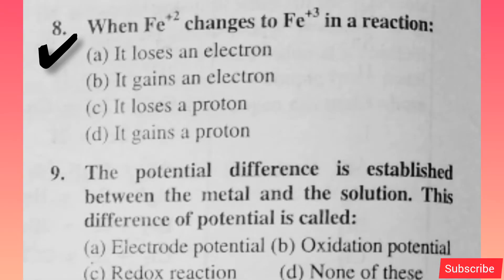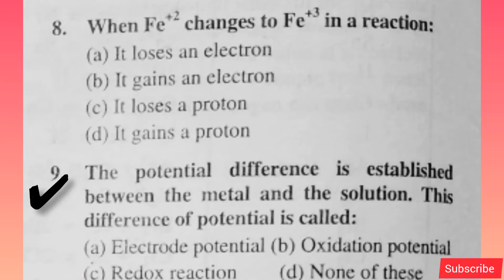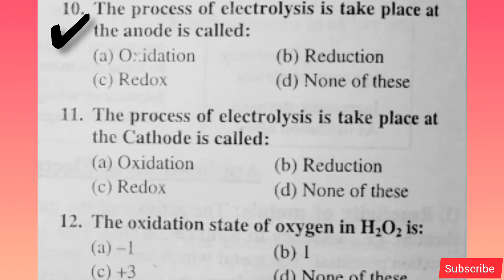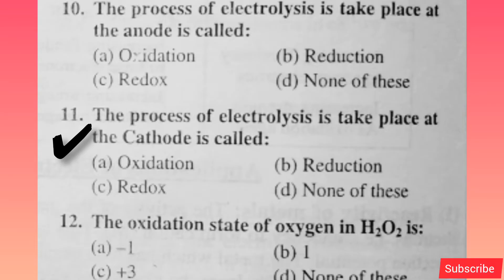When Fe2+ changes to Fe3+ in the reaction — option A is right. The potential difference established between the metal and the solution, this difference of potential is called — option A is right. The process of electrolysis that takes place at the anode is called — option A is right.